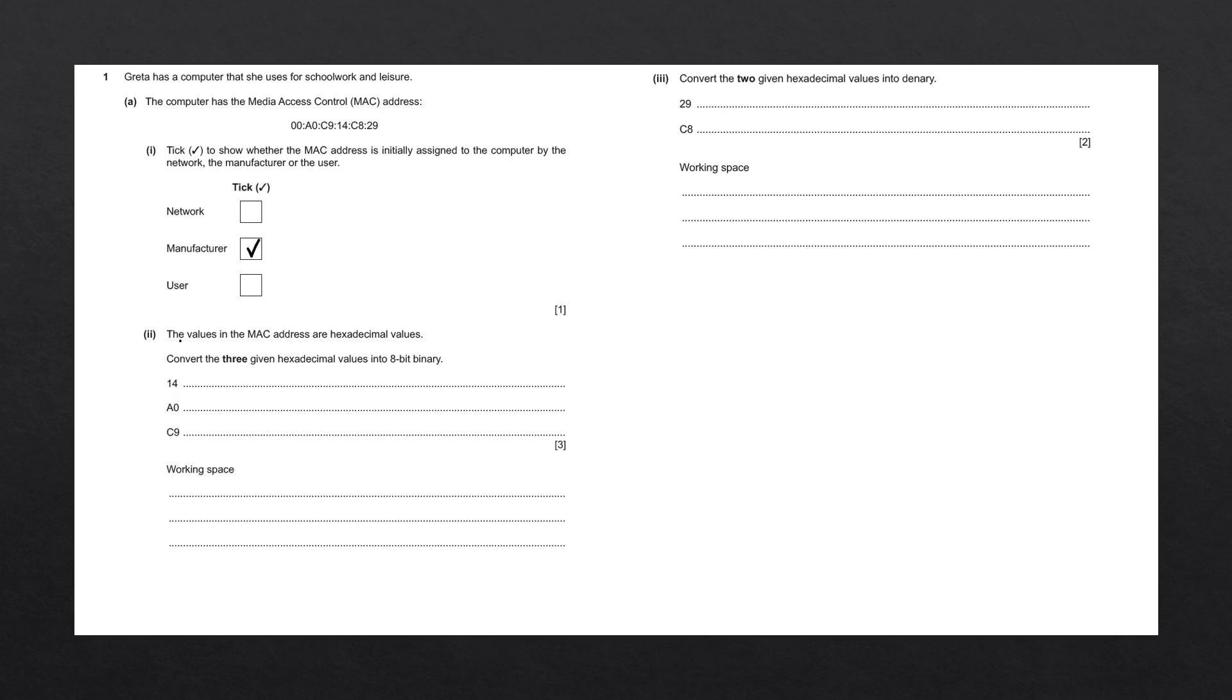Next question. The values in the MAC address are hexadecimal values. Convert the three given hexadecimal values into 8-bit binary. We have 1, 4, A0, and C9. To convert a hexadecimal number into a binary number, we're going to convert each individual hexadecimal number by itself. Bear in mind that the first 10 digits of hexadecimal are just denary.